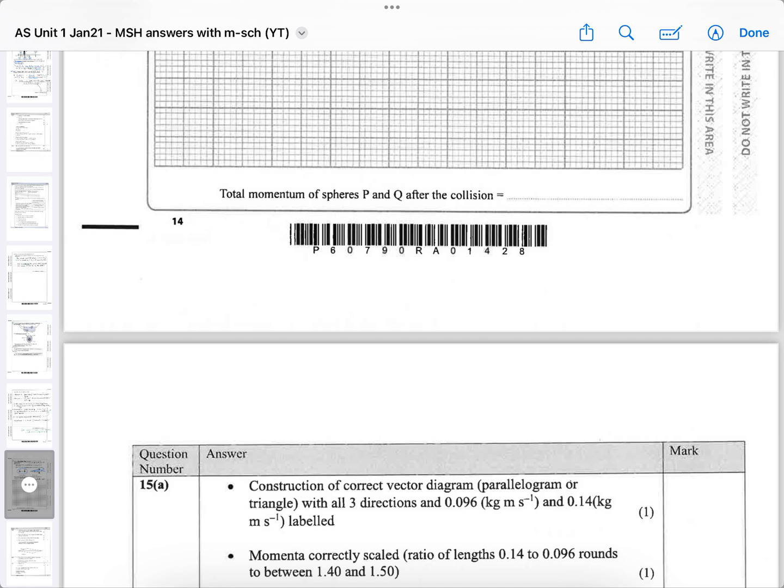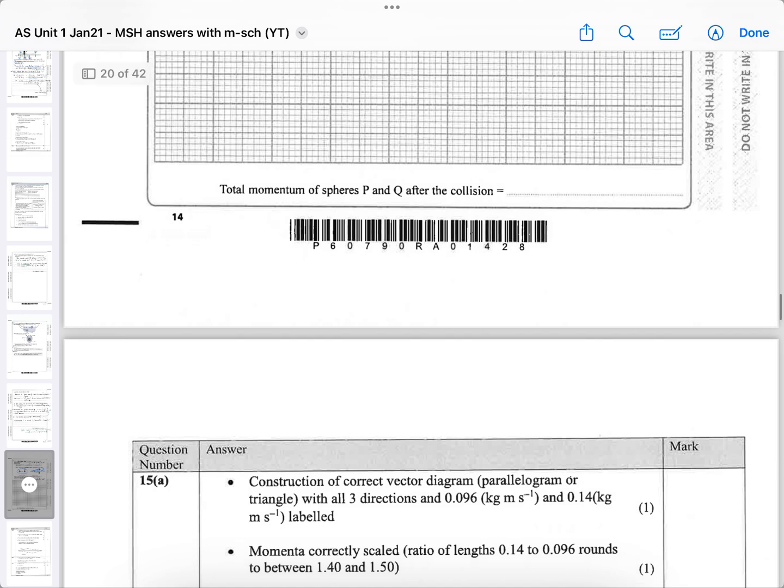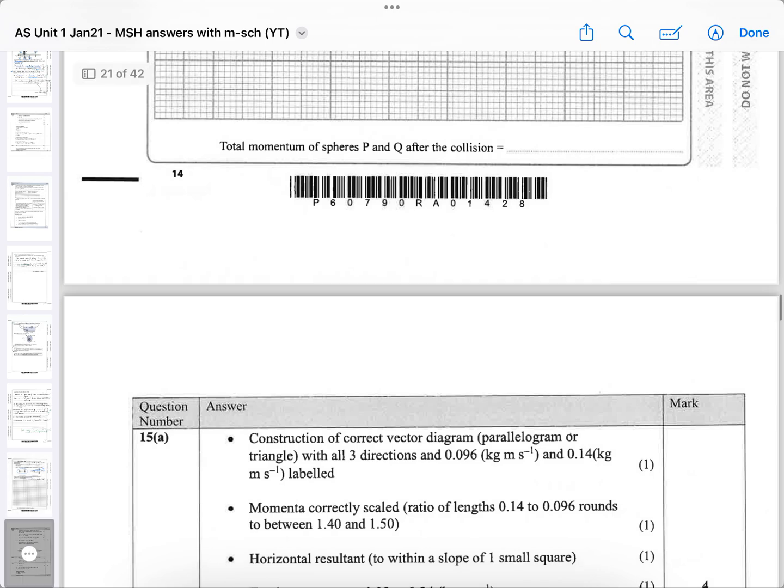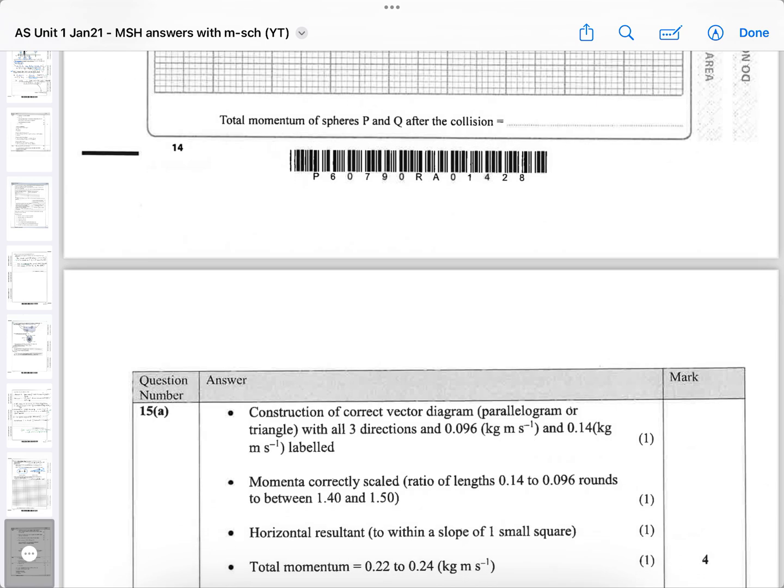And then add up the two momenta, momenta is plural for momentum, the two momenta correctly scaled. The ratio must be 0.14 to 0.096. I don't know what they're saying, rounds to between 1.4 and 1.5. I don't know what that means. I have to work it out. So as long as the scale ratio of 0.14 to 0.096, you choose your scale. That's just a scale drawing. They do scale drawings in geography, don't they? So it shouldn't be too difficult for most intelligent students who are in A-level. And then the horizontal resultant should be drawn to within a slope of one small square, one small square. So if you're off by more than one small square, you will lose the accuracy mark for drawing the addition of the two vectors.